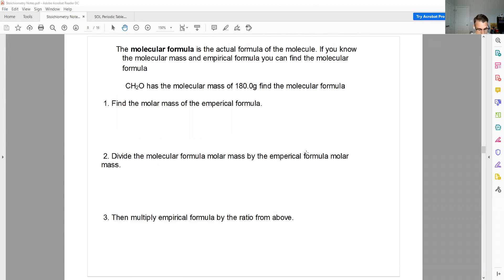Okay, the molecular formula is the actual formula. So the empirical formula is the lowest whole number ratio. The molecular formula is what the actual formula is. So in order to determine the molecular formula, you need a mass and you need an empirical formula. So this question says CH2O, which is what we just found, was the empirical formula. Its molecular mass is 180 grams. We want to find the molecular formula.